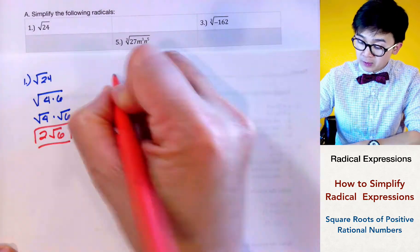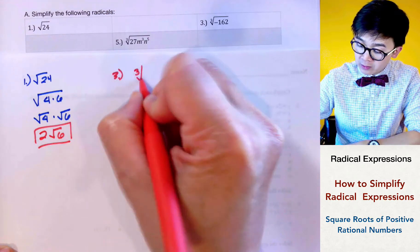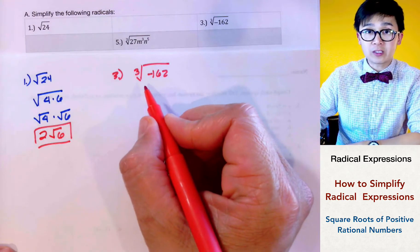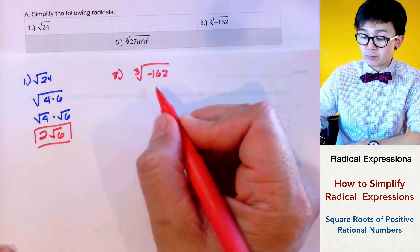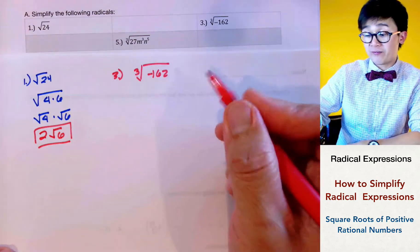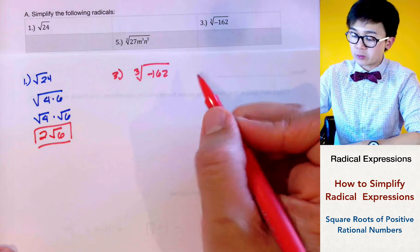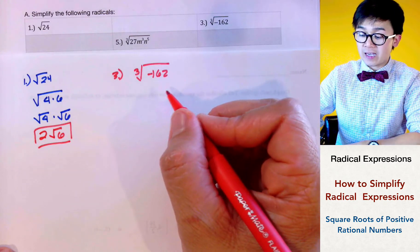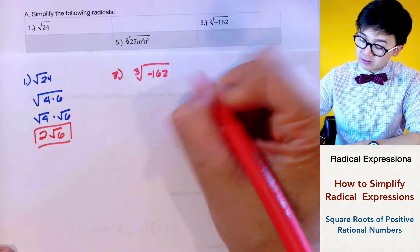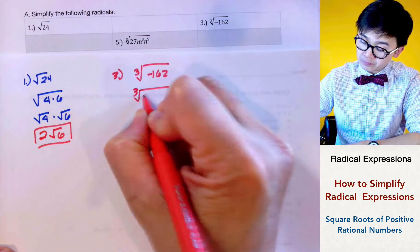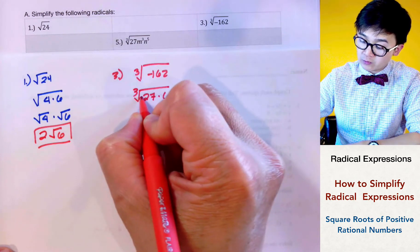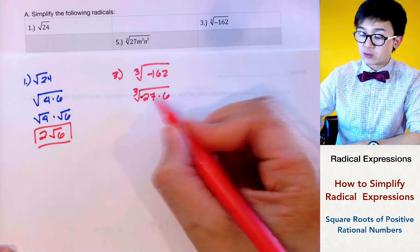For problem number 3, we have the cube root of negative 162. Since we're looking for the cube root, we need to find perfect cube factors of 162. The factors of 162 that include a perfect cube are 27 and 6, because 27 times 6 equals 162. Don't forget that this expression is negative.